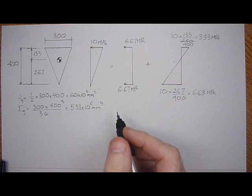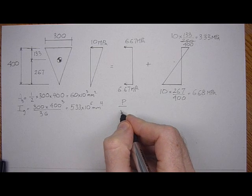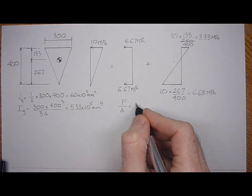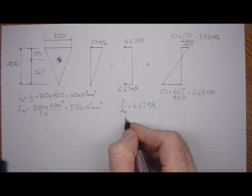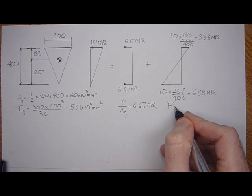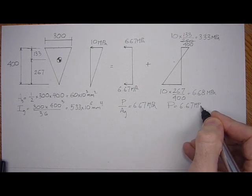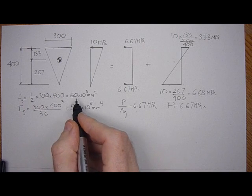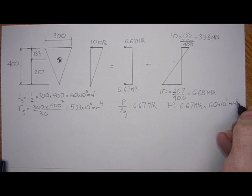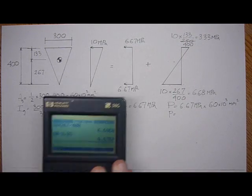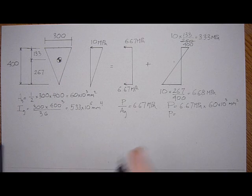Now all we have to do is calculate the P and the E. So we know that P over A equals the stress 6.67 MPa area gross. So the P is equal to 6.67 MPa times the area 60 times 10 to the third millimeter squared. So P would equal 6.67 times 60. And that would put it in kilonewtons, 400 kilonewtons.